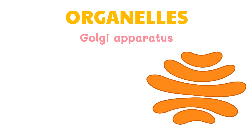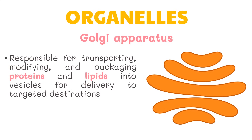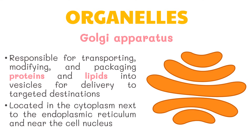Another organelle is the Golgi apparatus. It is responsible for transporting, modifying, and packaging proteins and lipids into vesicles for delivery to targeted destinations. It is located in the cytoplasm next to the endoplasmic reticulum and near the cell nucleus. While many types of cells contain only one or several Golgi apparatus, plant cells can contain hundreds.